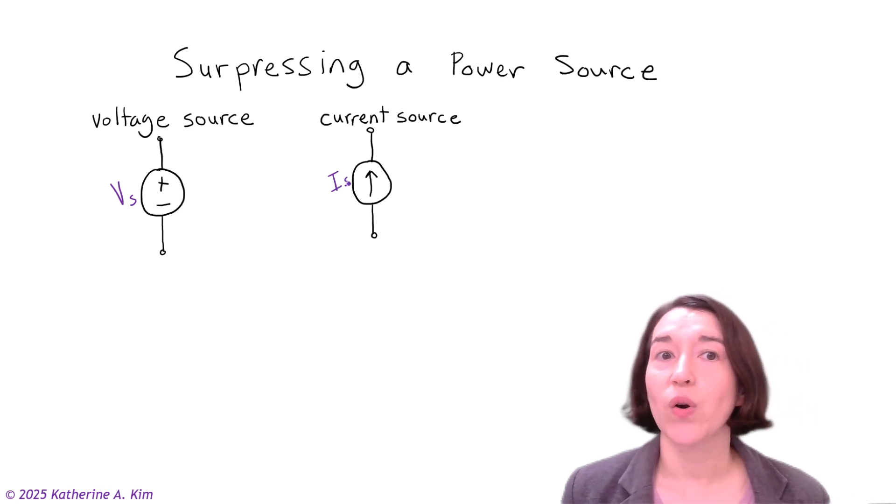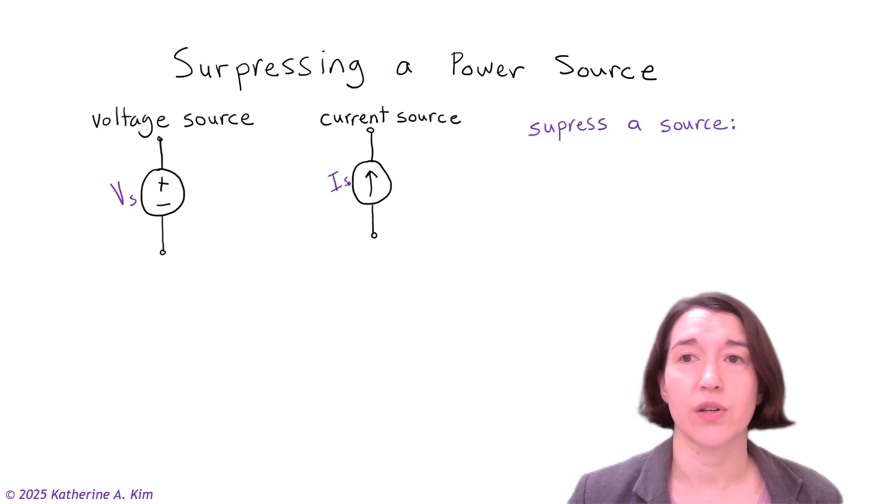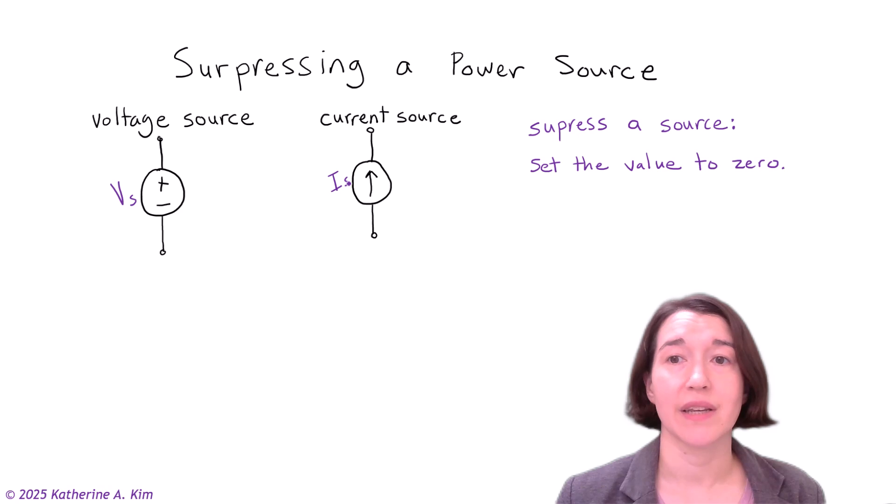So how do we suppress it? Well, all we're doing when we're suppressing a source is we are taking its value and setting its value to zero. So the definition of suppressing a source is set the value to zero.